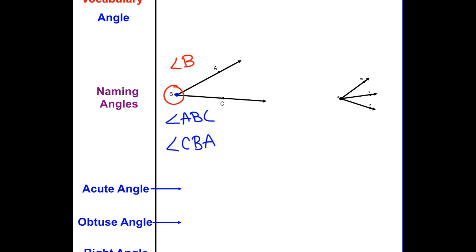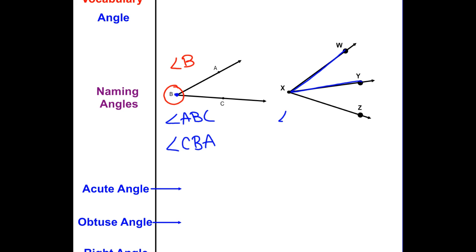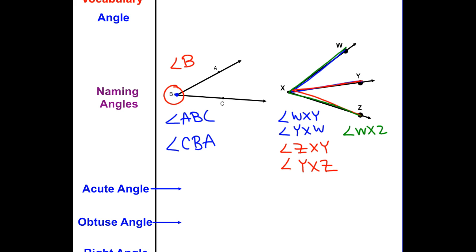Here's why we can't always use a single letter. With multiple angles at vertex X, angle WXY can be called angle WXY or YXW. Angle ZXY can be called ZXY or YXZ. Angle WXZ can be called WXZ or ZXW. If you just said angle X, we wouldn't know which one you mean — WXY, YXZ, or ZXW.